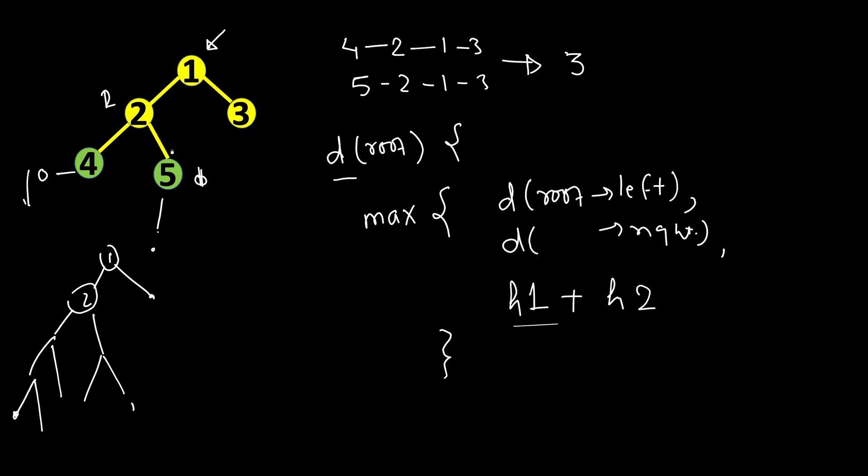One would be that you define a separate function for calculating the height of a tree, but that would not be optimal. You will do multiple traversals of the tree. So here we will optimize our solution so that we just do one traversal of the tree, and in that only we will keep track of the height of a node.